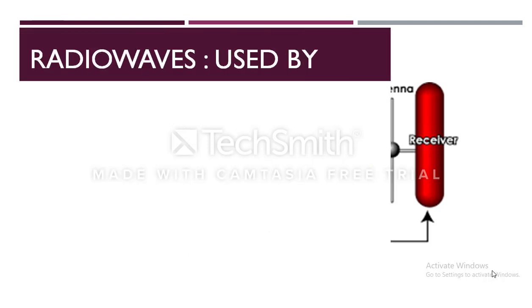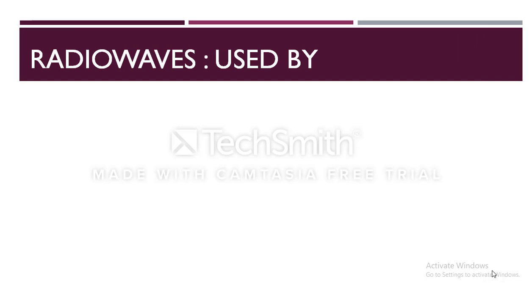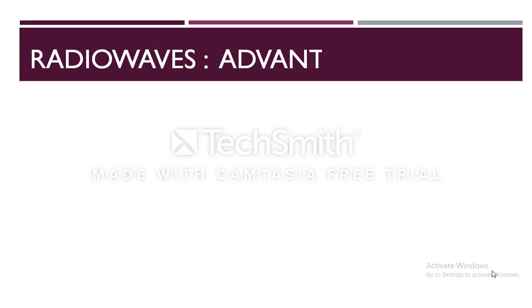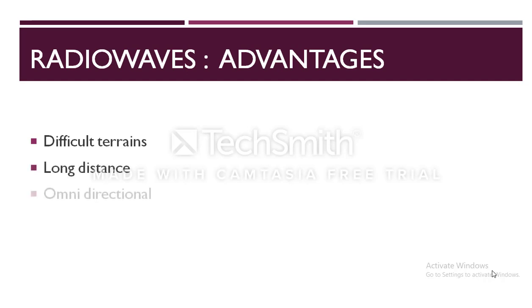Radio transmission is widely used by delivery services, policemen, security personnel, etc. Some of the advantages of radio waves are: it is easy to communicate through radio waves in difficult terrains since there is no need of digging and laying cables. Radio waves can travel through long distances in all directions. Also, they can easily pass through obstacles like buildings, so they can be used for both indoor and outdoor communications.